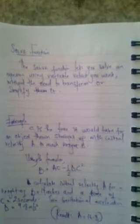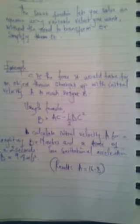Looking at this example using the formula B equals AC minus half DC squared. We are to calculate initial velocity A for a height of B equals 14 meters, time C equals 2 seconds, and gravitational acceleration D equals 9.8 meters per second squared.